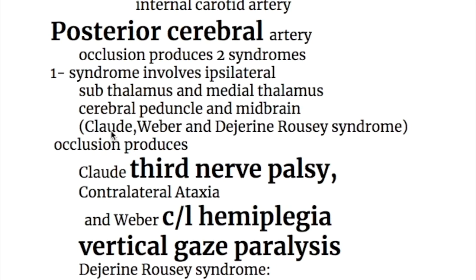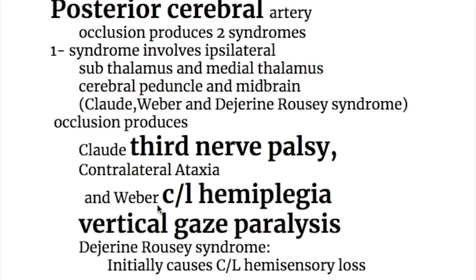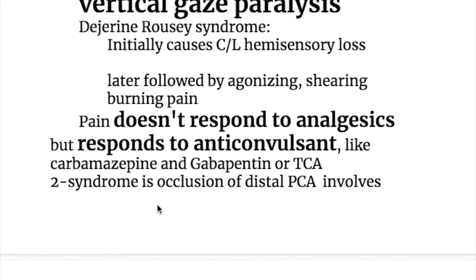Syndrome one causes Claude and Weber syndrome, which we have already covered in other videos. It also causes Dejerine-Roussy syndrome. The posterior cerebral artery syndrome produces third nerve palsy and contralateral hemiplegia, and vertical gaze paralysis. Dejerine-Roussy syndrome initially causes contralateral hemisensory loss, but later it is followed by agonizing, shearing, burning pain.